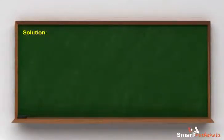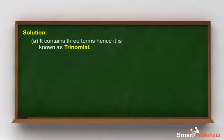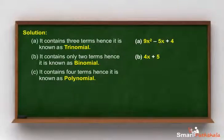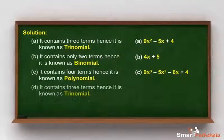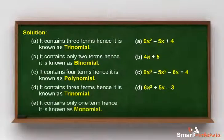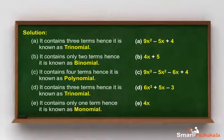Solution. A: it contains 3 terms, hence it is known as a trinomial. B: it contains only 2 terms, hence it is known as a binomial. C: it contains 4 terms, hence it is known as a polynomial. D: it contains 3 terms, hence it is known as a trinomial. E: it contains only 1 term, hence it is known as a monomial.